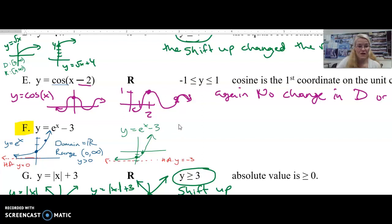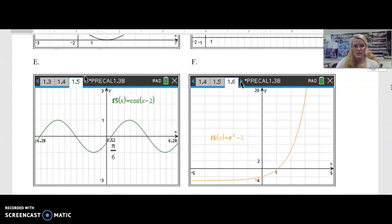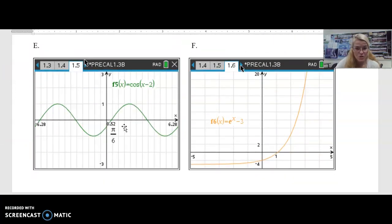And so what is our domain? Well, it's still all real numbers. Nothing changed there. But what is the range? The range, instead of y being strictly greater than 0, y must be strictly greater than negative 3, because it's all been shifted down. So you might say, or it's from negative 3 to infinity. That's my range in interval notation. And you can see those in your calculator if you graph them. Here's cosine minus 2, here it's been shifted over 2 units. Here, e to the x minus 3, it's been shifted down 3 units.